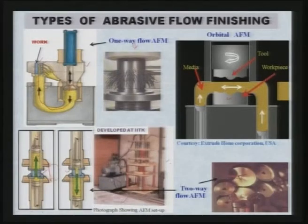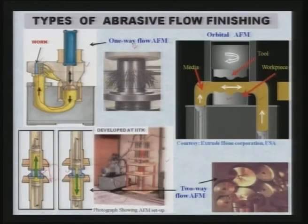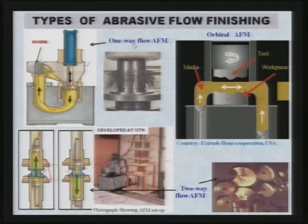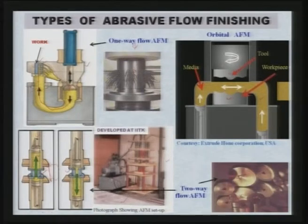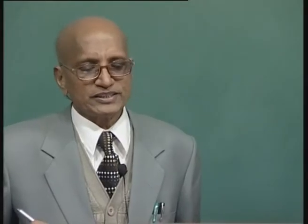For workpieces with blind cavities, one-way and two-way AFF cannot be applied. Extrude Hone developed the orbital AFM process: one cylinder-piston on the left and another on the right, with a tool that is the inverse shape of the workpiece cavity. When this tool comes down it pushes the medium into contact with the irregular blind cavity, and when the tool rotates, the medium is pushed from both sides and moves relative to the workpiece surface. Abrasive particles then finish the blind cavity, achieving very good surface finish.